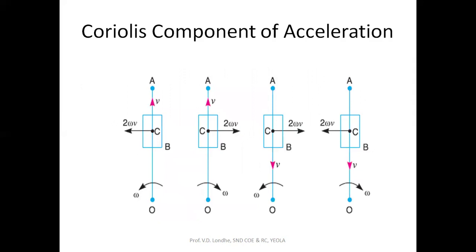These are the basic directions for the Coriolis component. As we are not having the numerical part, only theoretical part, these are the sign conventions. Suppose this link OA and this slider B is placed on this link OA. If your link OA is running in this sense and your slider is moving outward, then this is the direction of the Coriolis component.